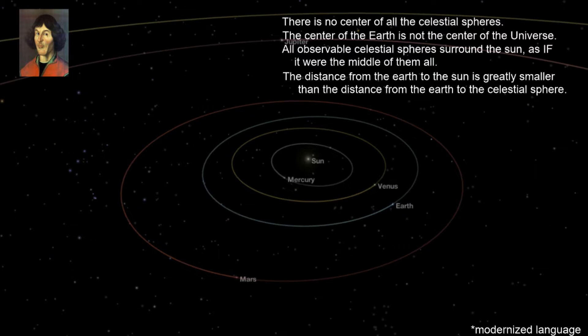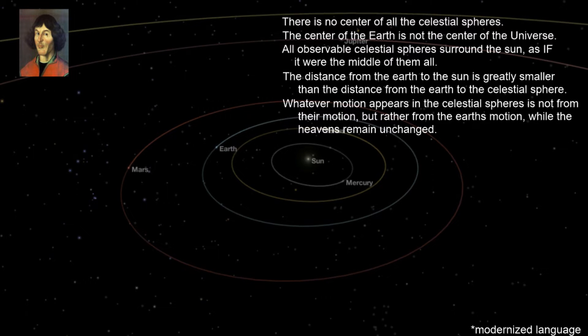The distance from the Earth to the sun is greatly smaller than the distance from the Earth to the celestial sphere. Whatever motion appears in the celestial spheres is not from their motion but rather from the Earth's motion, while the heavens remain unchanged.